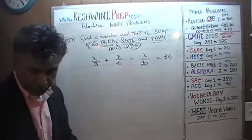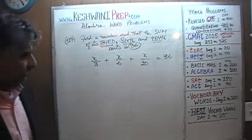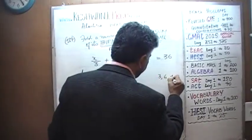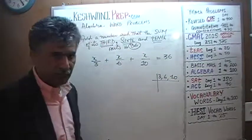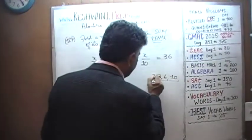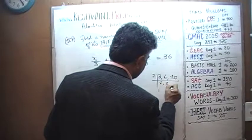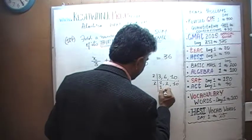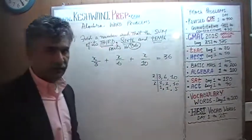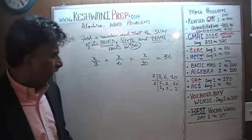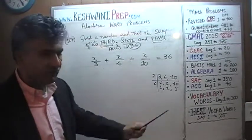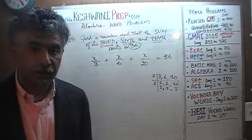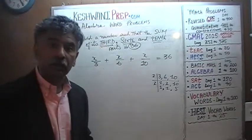Again, as always, we need a common denominator. We have 3, 6, and 10. We are looking for the least common multiple. Dividing by 3 gives us 1, 2, and 10. Then dividing by 2 gives us 1, 1, and 5. So the LCM is 3 times 2 times 5, which is 30. We need a common denominator of 30 throughout, so let's make the denominator of each term in this equation 30.